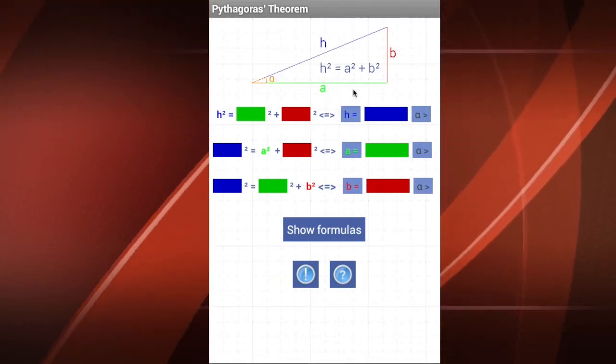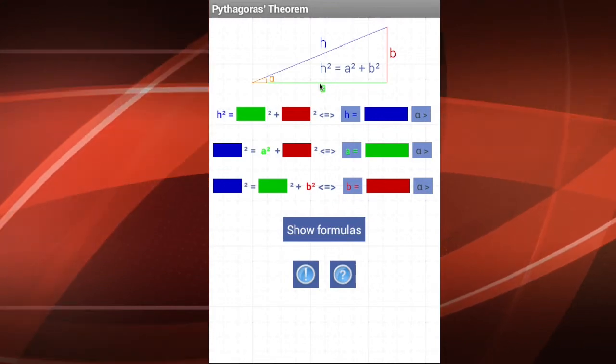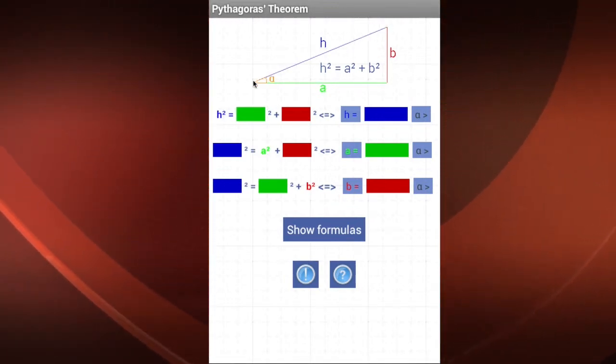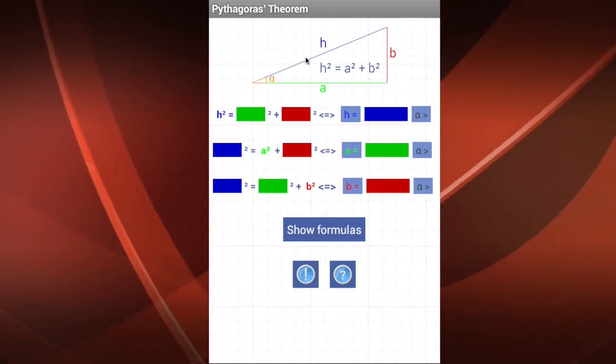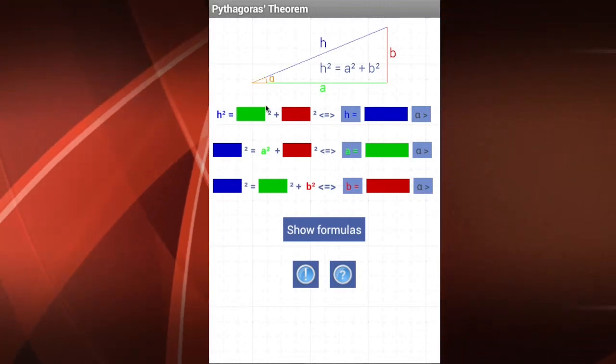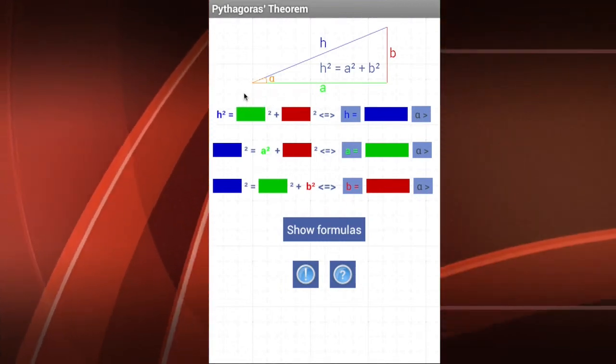If you see, we have here the sides A and B in green and red, and the hypotenuse H in blue. Using these colored boxes, it's very easy to use this program.